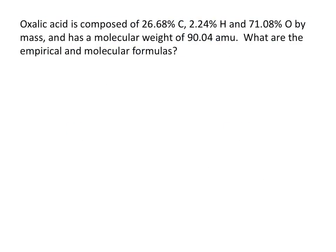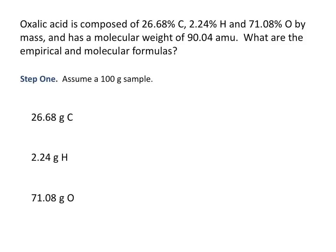Let's try another example. Oxalic acid is composed of 26.68% carbon, 2.24% hydrogen, and 71.08% oxygen by mass, with a molecular weight of 90.04 AMU. What are the empirical and molecular formulas? Again, assume a 100 gram sample: that gives 26.68 grams of carbon, 2.24 grams of hydrogen, and 71.08 grams of oxygen. Convert the grams of each element to moles using the molar mass from the periodic table.